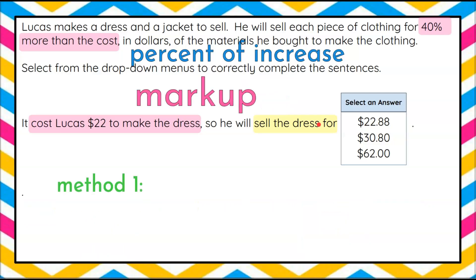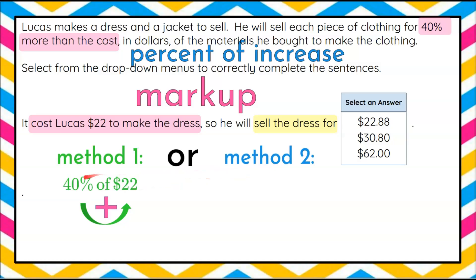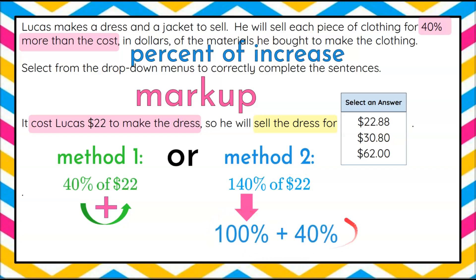We're going to use Method 1 and Method 2. Method 1: find 40% of $22, then add it on to $22. So 22 plus 40% of 22. Method 2: since 22 is 100% of his cost, plus the 40% markup, we use 140% of 22 — that 140% is 100% of his cost plus the 40% markup. So we find 140% of 22, and that's what he sold the dress for.